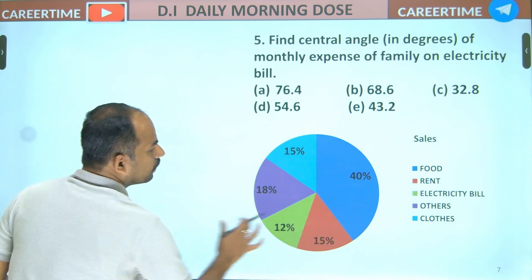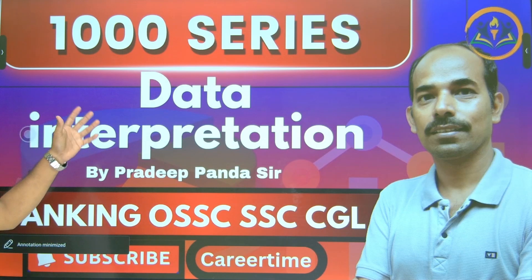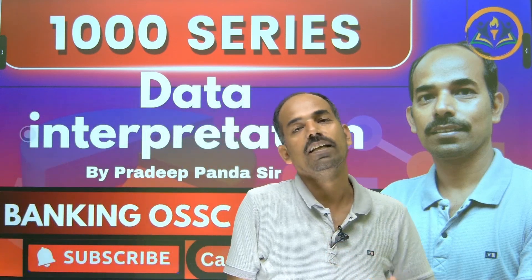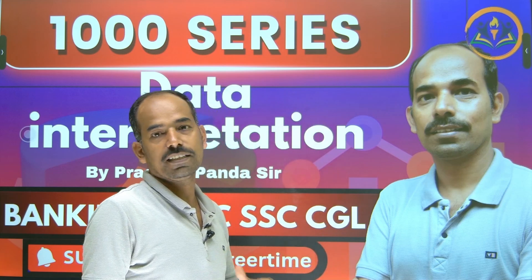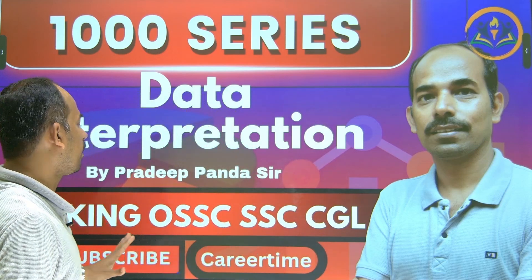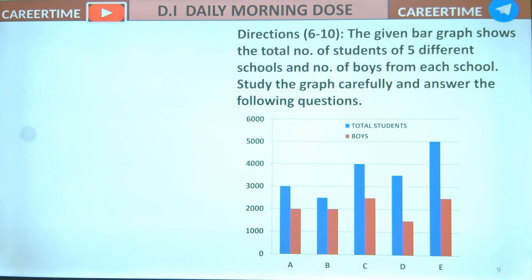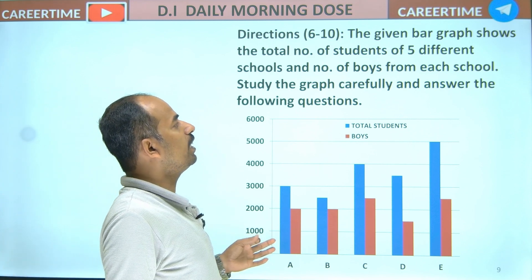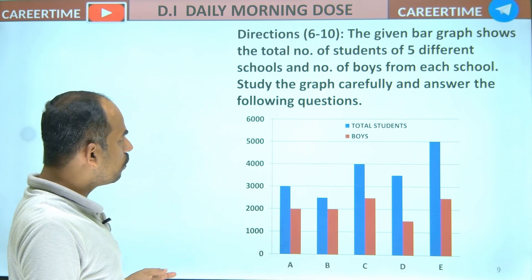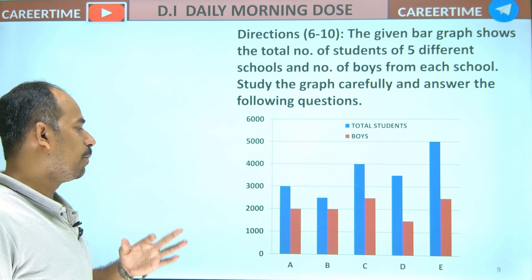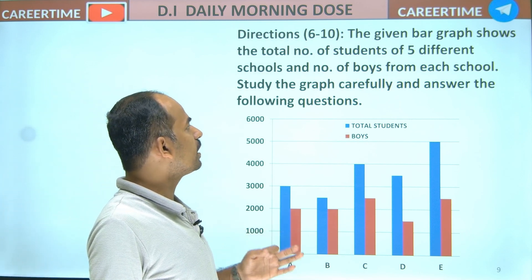Another DI set. This is a 1000-series. Use it — this is in the playlist. Mathematics 5. Question numbers 6 to 10. This is a bar graph: the total number of students in 5 different schools — A, B, C, D, E. Five schools. Number of boys from each school and the total number of students.